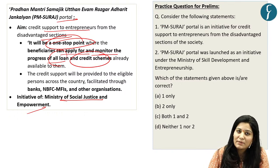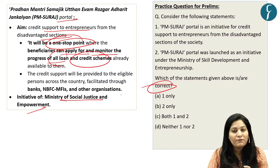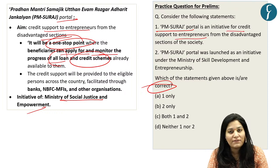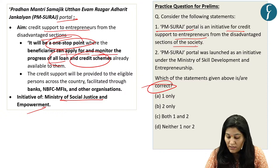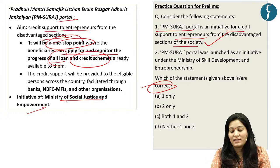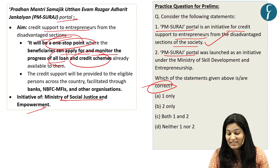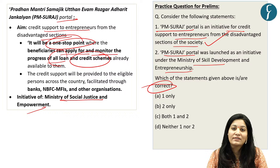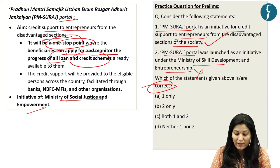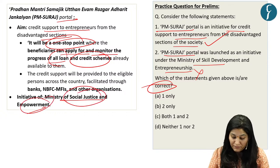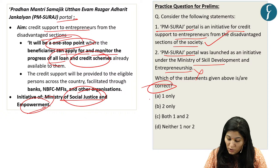Practice question: Two statements are given. Statement 1 — PM SURAJ Portal is an initiative for credit support to entrepreneurs from the disadvantaged section of society — is correct. Statement 2 — PM SURAJ Portal was launched under the Ministry of Skill and Entrepreneurship — is incorrect, as it is an initiative of the Ministry of Social Justice and Empowerment. The correct answer is Option A, only statement 1.